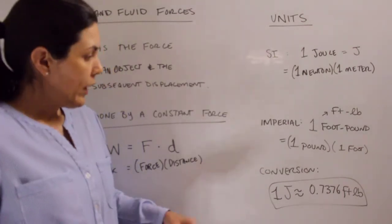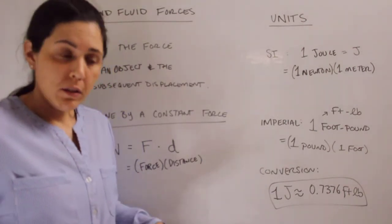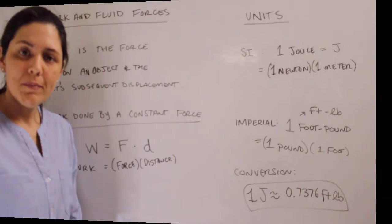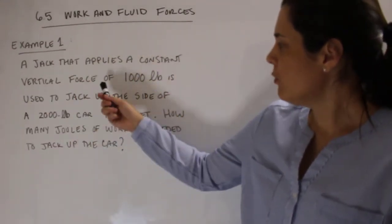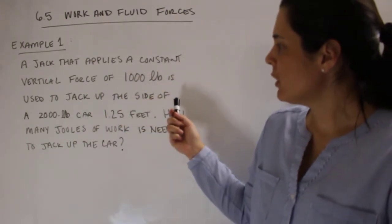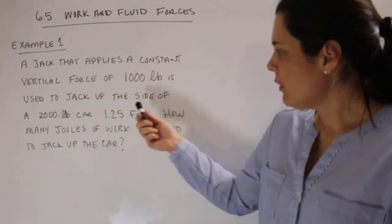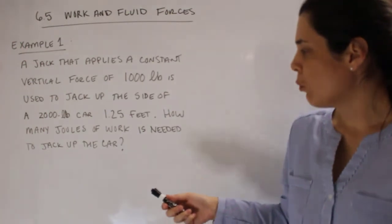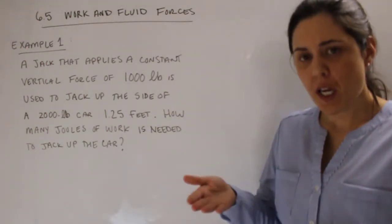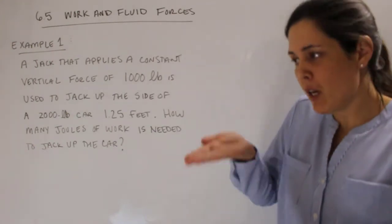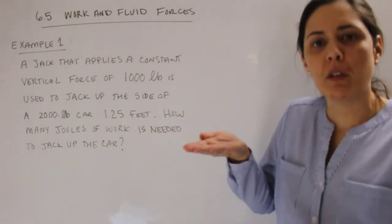We're going to go right into an example of how to calculate work and how this is involved. So example 1 says, a jack that applies a constant vertical force of 1,000 pounds is used to jack up the side of a 2,000 pound car 1.25 feet. So the car jack is pushing the side of the car up 1.25 feet from the ground. How many joules of work is needed to jack up the car?